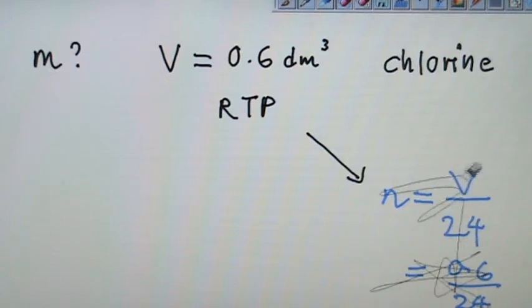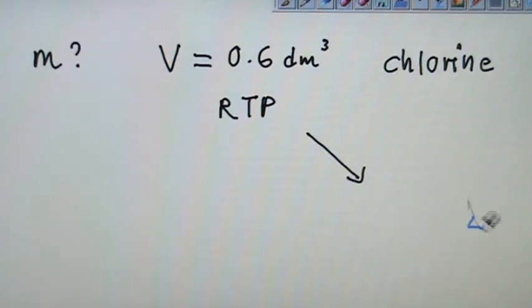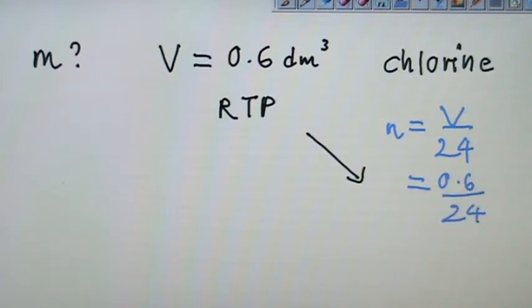Number of mole is 0.6, V over 24. So 0.6 divided by 24 will give you a figure of 0.025 mole.